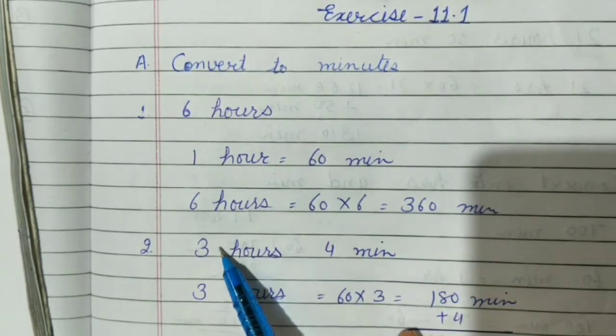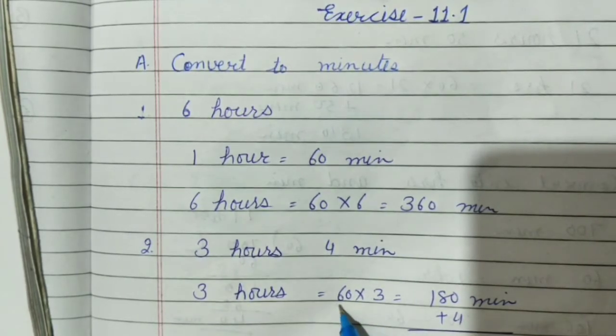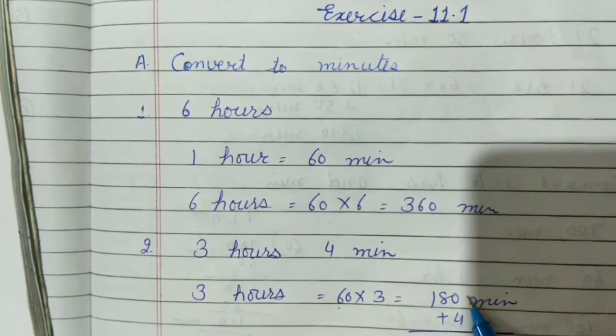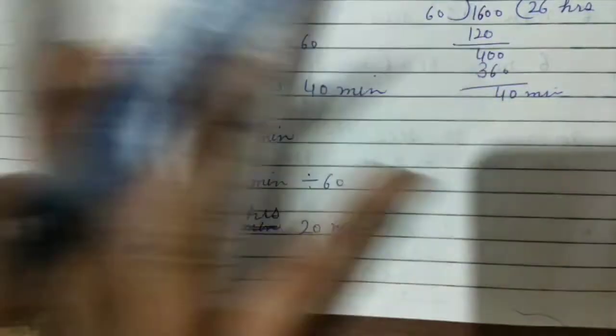First we will convert 3 hours into minutes. 3 hours equals, why am I multiplying by 60? Because 1 hour is equal to 60 minutes. So you will multiply 60 by 3, 180 minutes plus 4 equals 184 minutes.